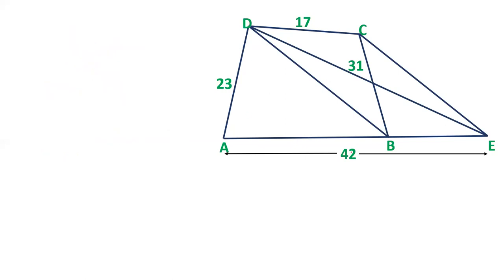In this question, DB is parallel to CE. And if DB is parallel to CE, we can say that triangle DBE, area of triangle DBE, is equal to area of triangle DBC.